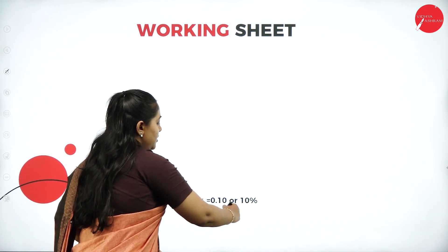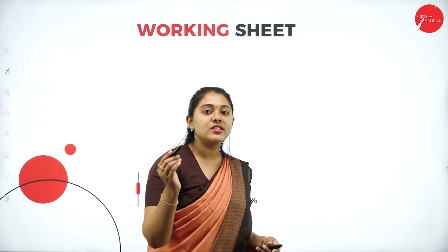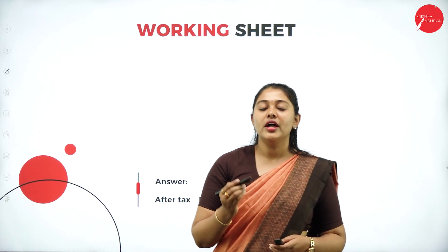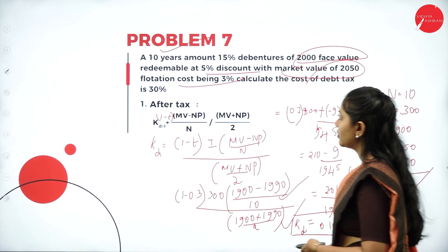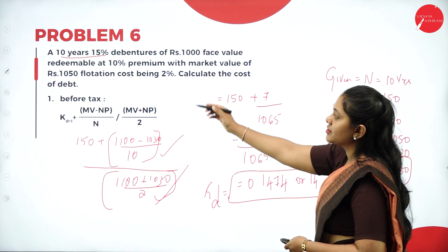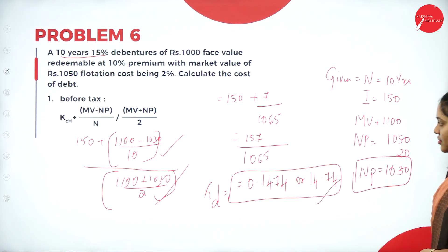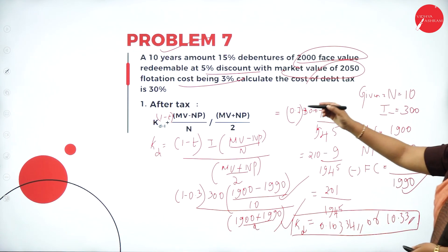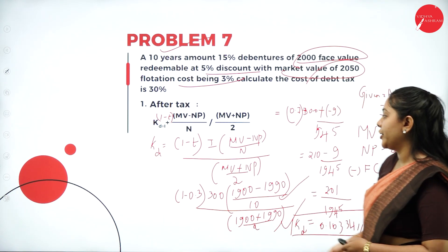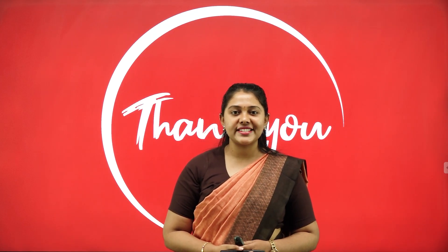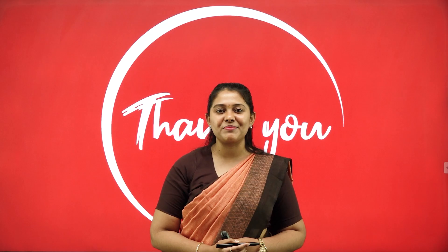To summarize: Problem 6, redeemed at premium, gives a before-tax cost of 14.74%. Problem 7, redeemed at discount, gives an after-tax cost of 10.33%. That's it for today's class. In the next class, we will solve problems on the cost of preference shares — both redeemable and irredeemable. Keep learning, stay blessed, stay fit. A smile is the biggest jewel you can wear. Keep smiling. Thank you.